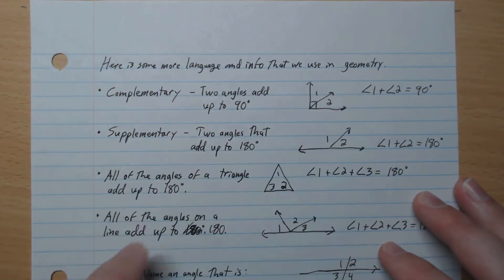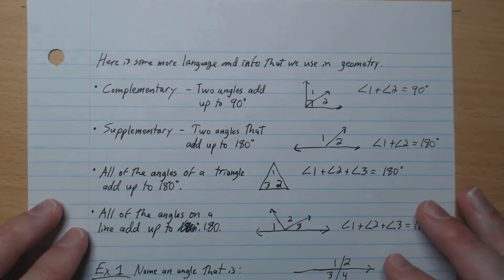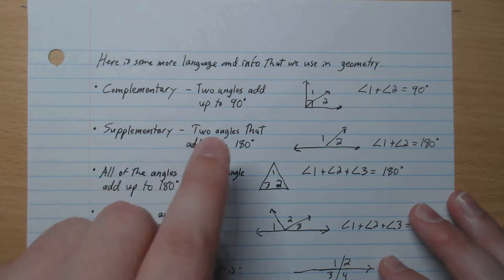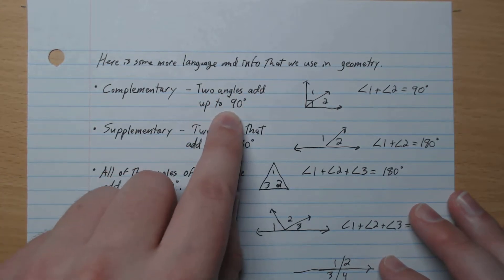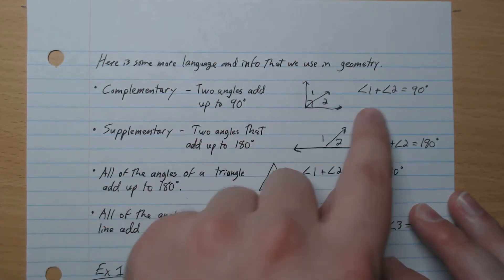Let's look at some more language before we do some examples. Here's some more language and info that we use in geometry. Complementary: when 2 angles add up to 90. Angle 1, angle 2, add up to 90.